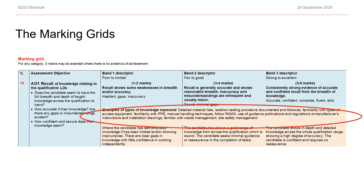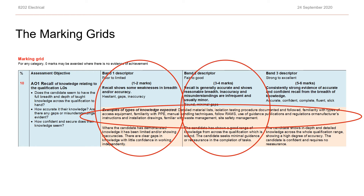Band one, at the lower end of the marks, is for candidates who have demonstrated knowledge that is limited or showing inaccuracies. Band two is for candidates showing a good range of knowledge across the qualification, but who seek guidance from time to time. Band three, the higher end of the marking, is for candidates that carry out good quality work. Please don't think that these bands are grade boundaries — they are not.